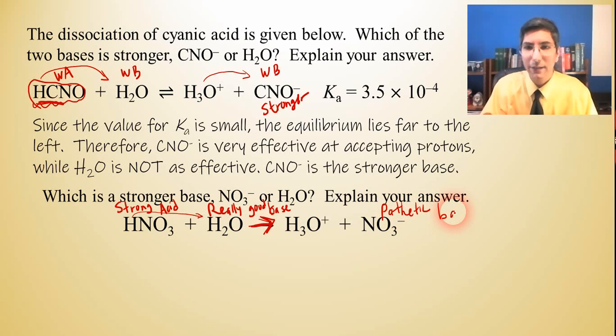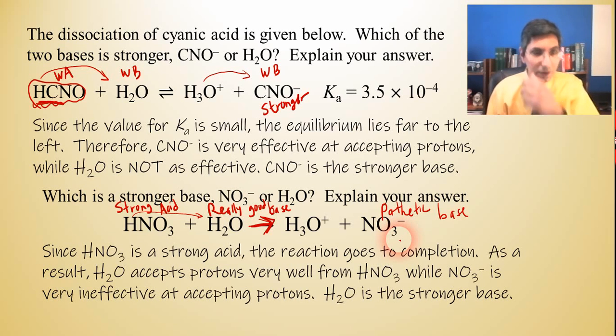Now, what about nitrate? Is nitrate able to accept any hydrogen ions from hydronium? No. And that's why this reaction goes to completion. Nitrate is not just a bad base. It's a pathetic base. Like we said in the last lesson, Lesson 25, these conjugate bases of strong acids, they couldn't accept hydrogen ions to save their life, could they? And so, nitrate is an awful base. And so, I would say that water is a much better base in this case. And that's what the answer says. Since nitric acid is a strong acid, the reaction goes to completion. As a result, water accepts protons very well from nitric acid. Well, nitrate is very ineffective at accepting protons. Water is the stronger base.